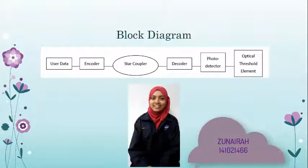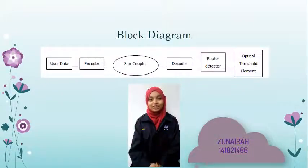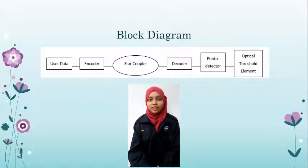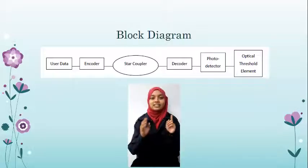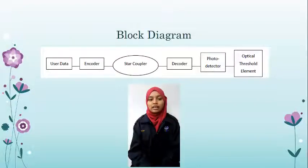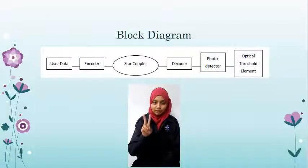Hello, I am Zimaira. Today I would like to tell you about how multi-accessing is achieved by going through the following steps. Step one: every data stream is encoded by employing a unique code sequence, through time spreading of each data bit and/or by spectral encoding of each data bit.